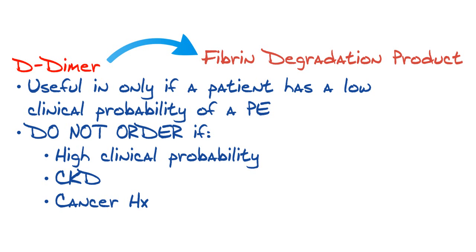If a patient has a high probability and the D-dimer is negative, that does not mean anything. D-dimer will be high or positive in almost anyone in the hospital — due to frequent lab draws, other conditions, or chronic kidney disease. So many things contribute to a high D-dimer besides having a PE or a clot. A high D-dimer does not mean clot, but a low D-dimer in a patient with low clinical probability can help you rule out a clot. Do not order this test if a patient has a high clinical probability.